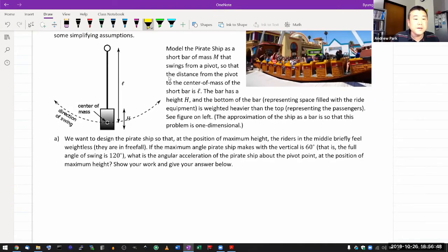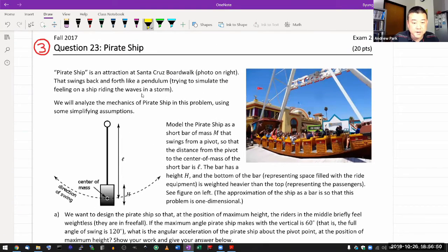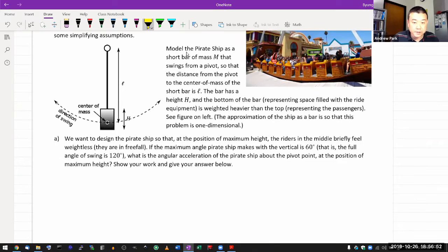Let's look at that. It says it's a pirate ship. Model the pirate ship as a short bar of some mass framed from a pivot, so that distance from the pivot is L. Pivot to the center of the mass—I guess that's somehow important. I think that non-uniform thing is what we are not going to worry about.